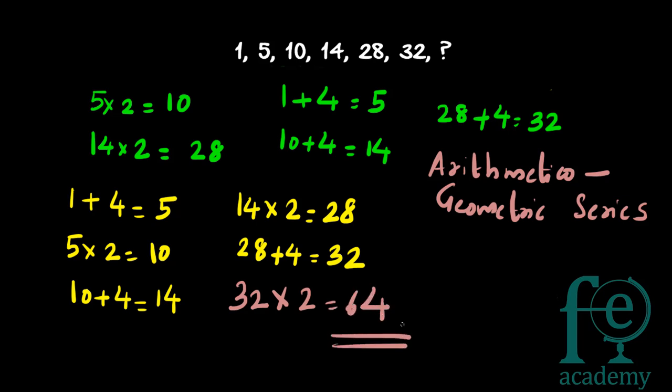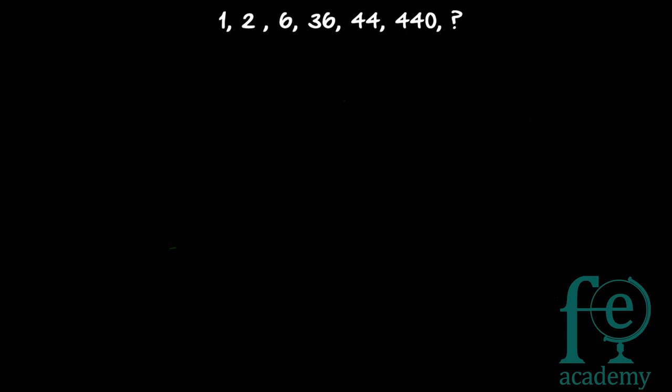The next question is: find out the missing number. The series is 1, 2, 6, 36, 44, 440. By seeing itself, you can easily say 44 into 10 is equal to 440. For 36 and 44 there is a lot of difference if you are doing subtraction, so by multiplication you can say 44×10=440.